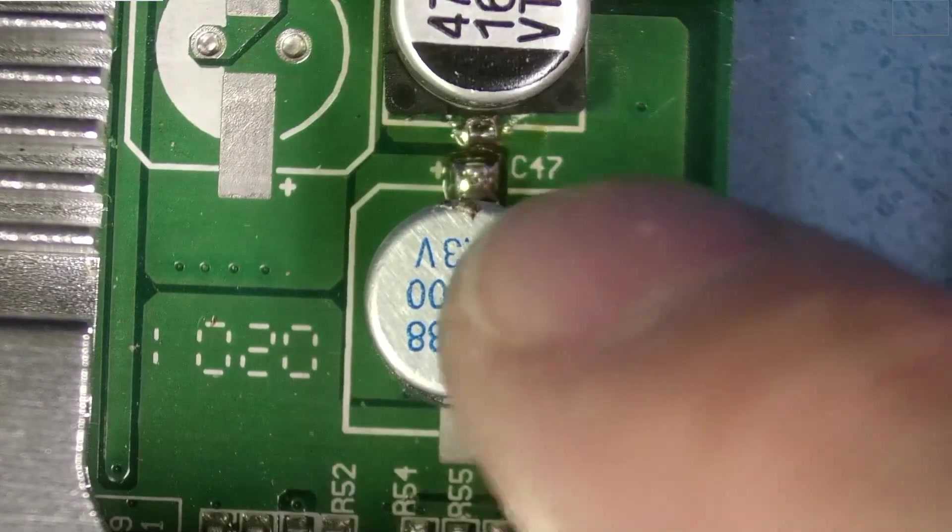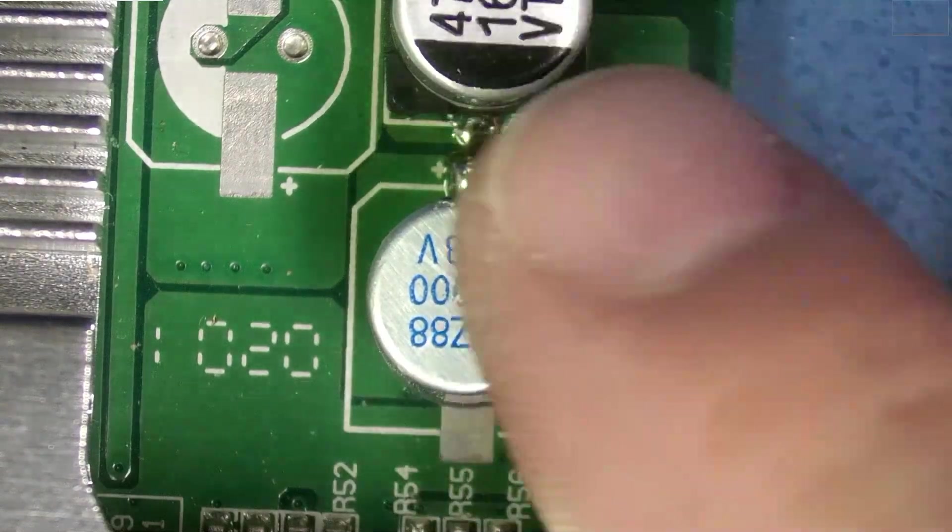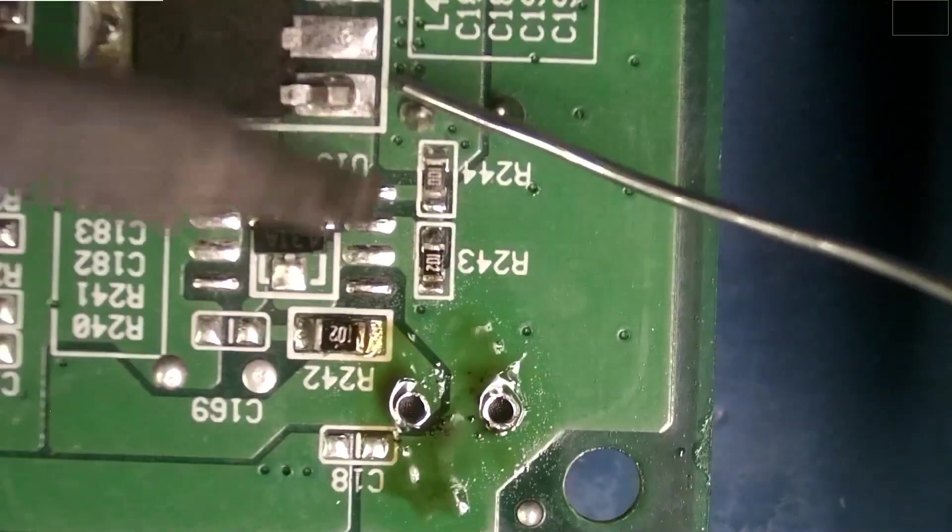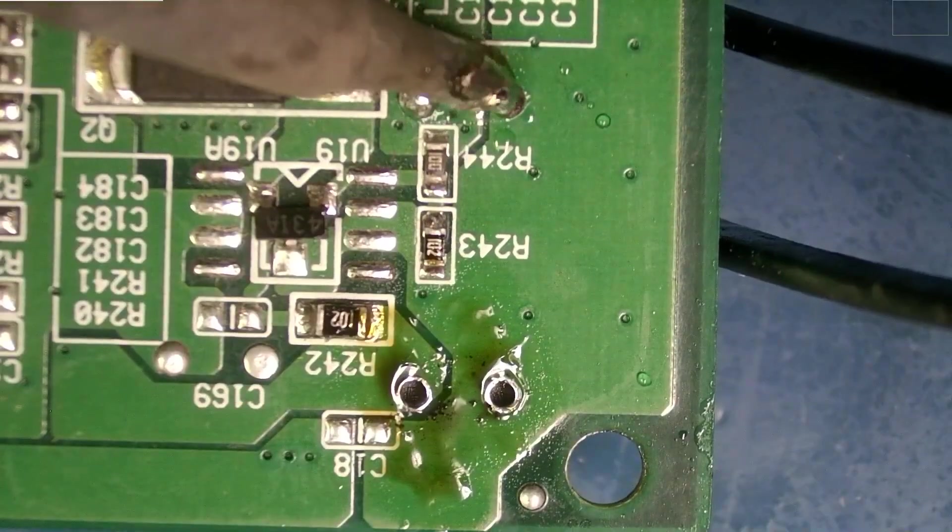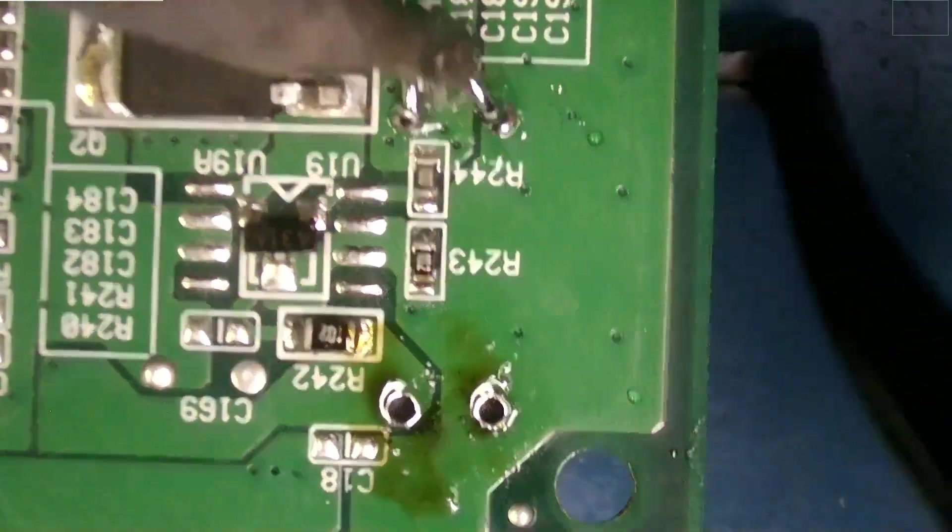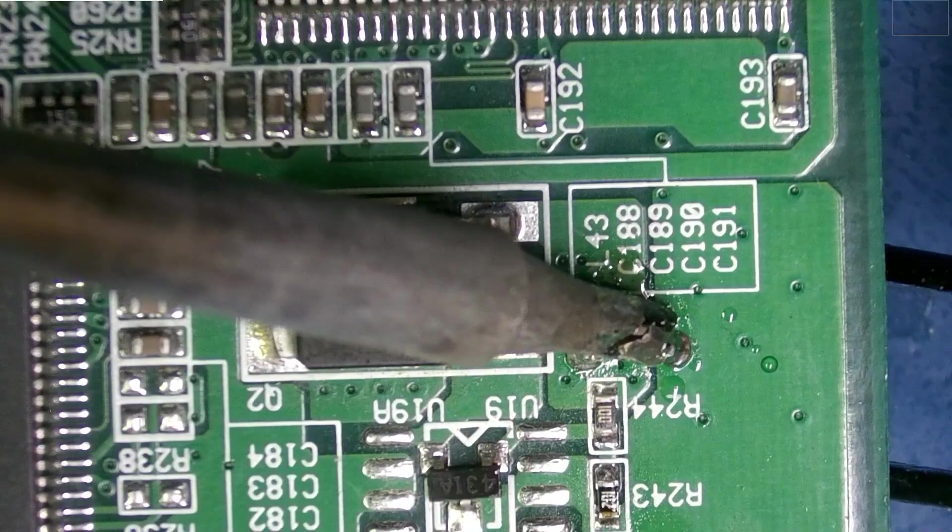Now we'll move on to the next, which is our 1000 microfarad, 6.3 volts, and it is right over here. Same thing, I'm going to be melting both legs at the same time. Kind of slipped out. All right, let's try again.